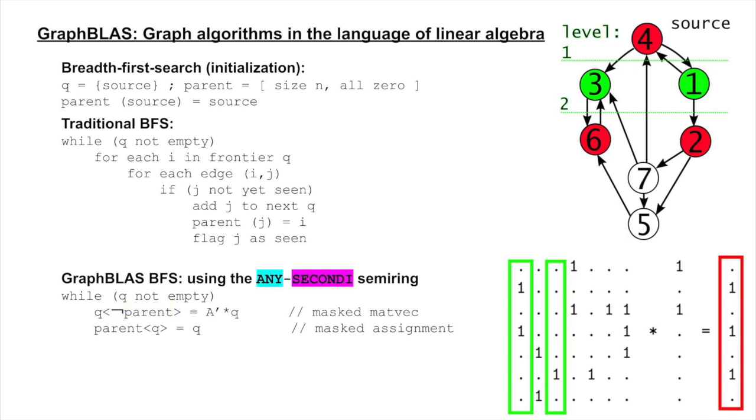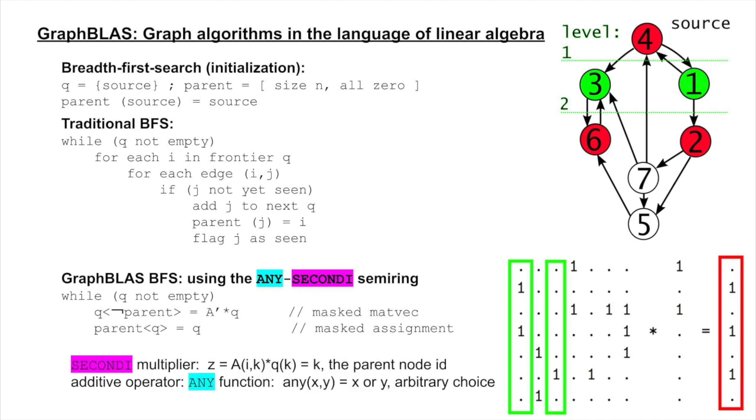We use the ANY-SECOND-i semi-ring for the BFS instead of the conventional plus times. The multiplicative operator, SECOND-i, returns the row index k with a candidate parent node ID. The additive operator is the ANY function which picks any valid parent.